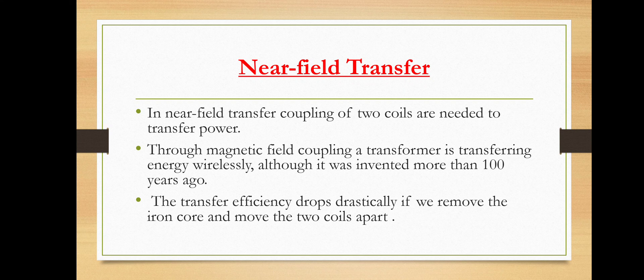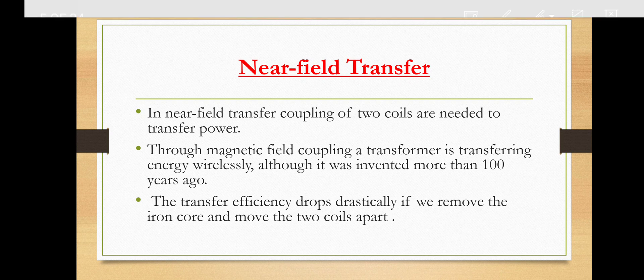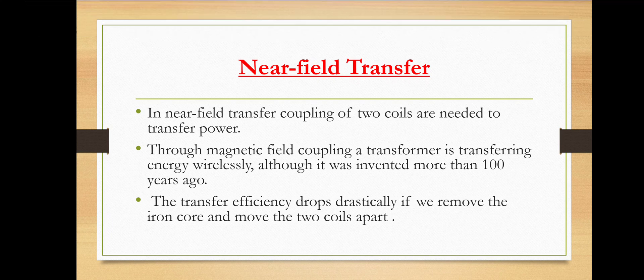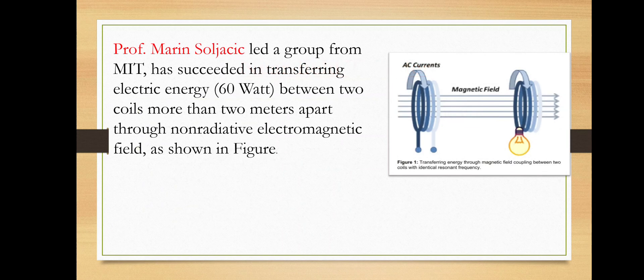The frequency of the transmitter and receiver coils is determined by the material and shape of the coil. Transfer efficiency will decrease much more slowly when they are moved apart. Professor Marin Soljacic led a group from MIT and succeeded in transferring electric energy between two coils more than 2 meters apart through a non-radiative electromagnetic field, as shown in the figure.